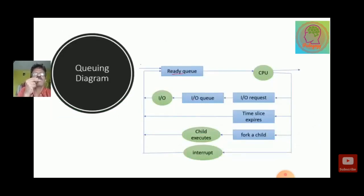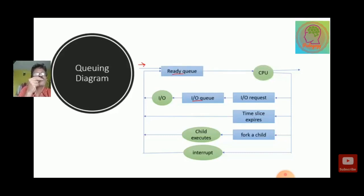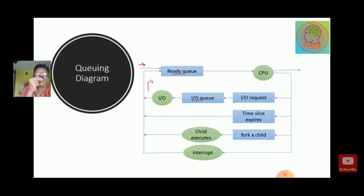Now the queuing diagram. In the queuing diagram we can see that from the ready queue, processes go into the CPU for execution. The CPU checks whether it is an input-output requested process, a time-slice expired process, a new process, or an interrupted process. Input-output request means, suppose a process requires a printer — the CPU checks it for IO request and sends it into the IO queue, and after IO operations it is sent back into the ready queue.